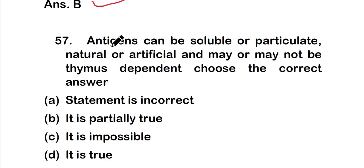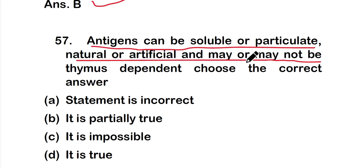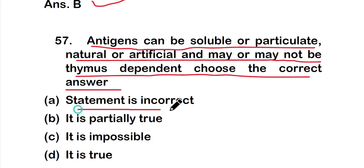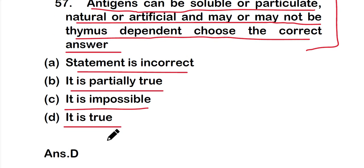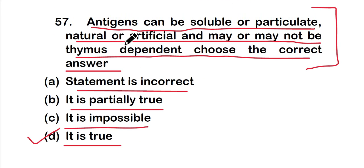Question 57: Antigens can be soluble or particulate, natural or artificial, and may or may not be thymus dependent. Choose the correct answer: option A the statement is incorrect, option B it is partially true, option C it is impossible, or option D it is true. The right answer is option D — the statement is true. Antigens can be soluble or particulate, natural or artificial, and may or may not be thymus dependent.